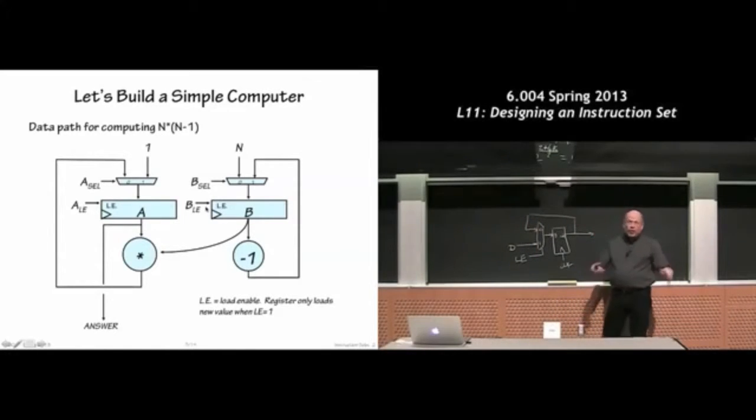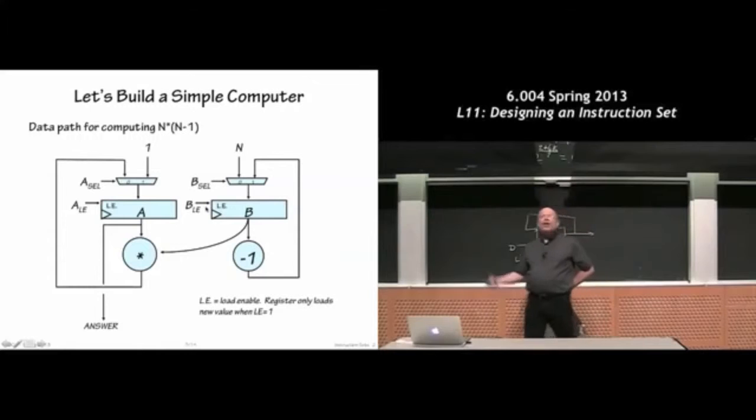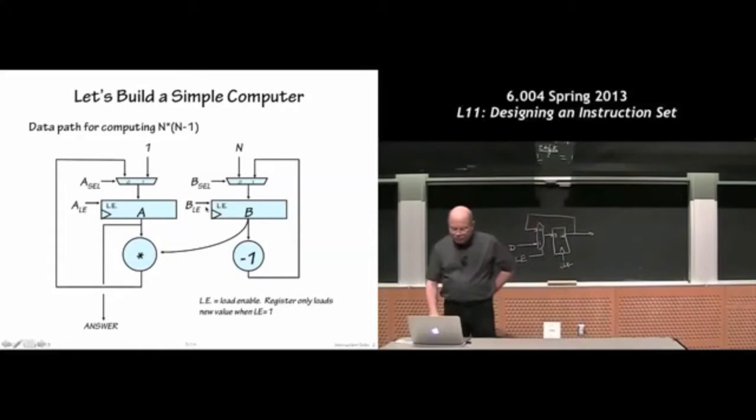So even though the actual physical register is loading a new value on its D input every cycle, depending on the value of the LE register, it can preserve its value from cycle to cycle simply by loading itself with its previous value. And then we have some multiplexers which are used to choose. So this is what's inside an LE register.